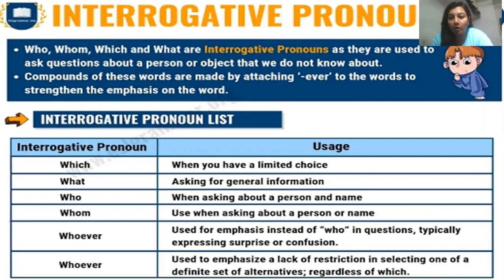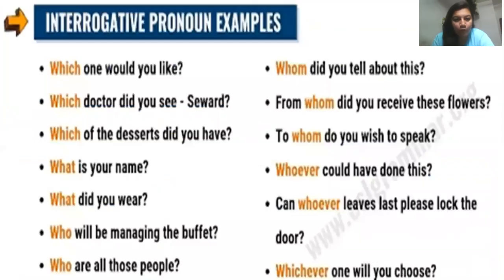For example: 'Whoever has not submitted the homework, raise your hand.' Here 'whoever' refers to any person who has not completed their work — we do not know who that person is, but we specify by giving a reasonable condition. Some more examples: 'Which one would you like?', 'Which doctor did you see?', 'What is your name?', 'What did you wear?' — these all show interrogative pronouns asking questions related to the noun or subject in the sentence.